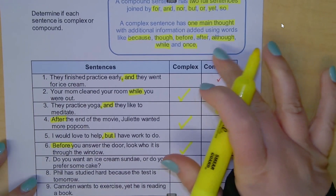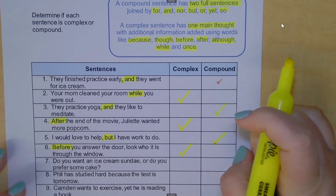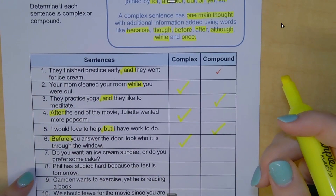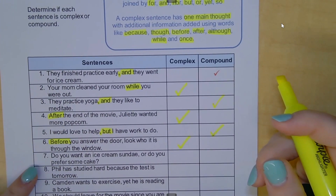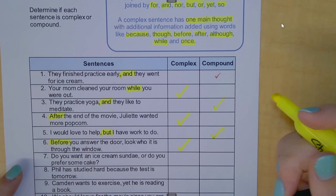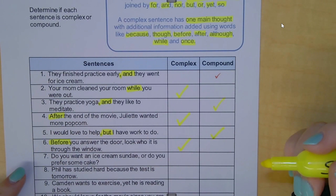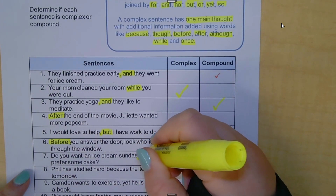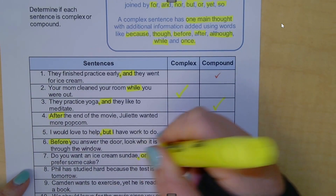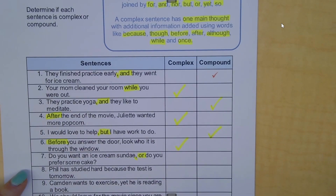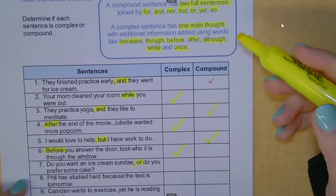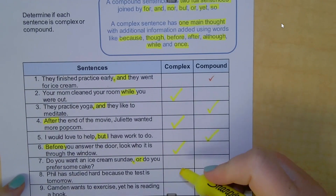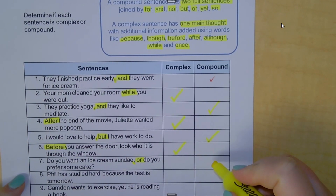I hope you can see why printing off those charts is so helpful. Number seven: 'Do you want an ice cream sundae, or do you prefer some cake?' I see a comma and the word 'or.' Or is a FANBOY, so it is a compound sentence.